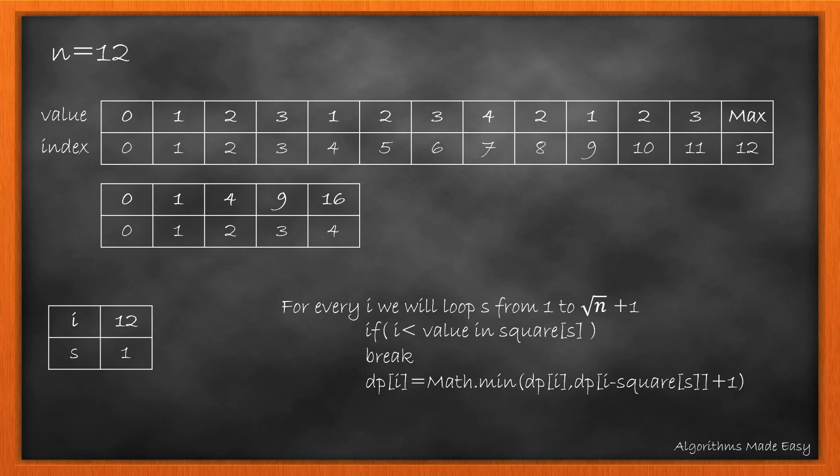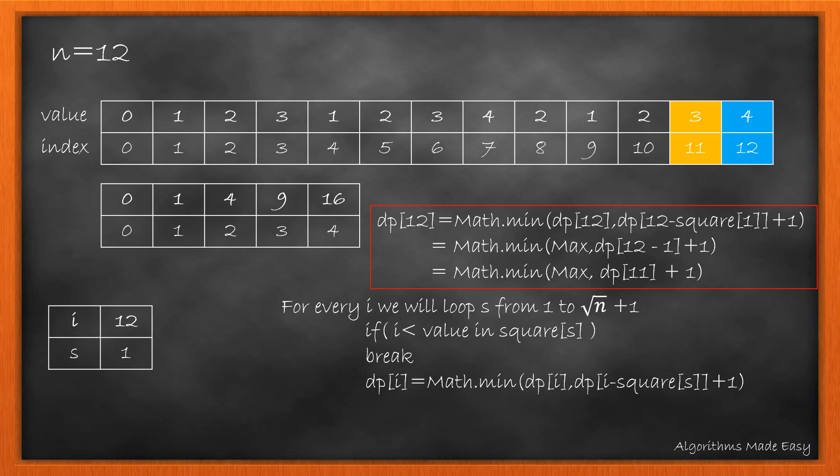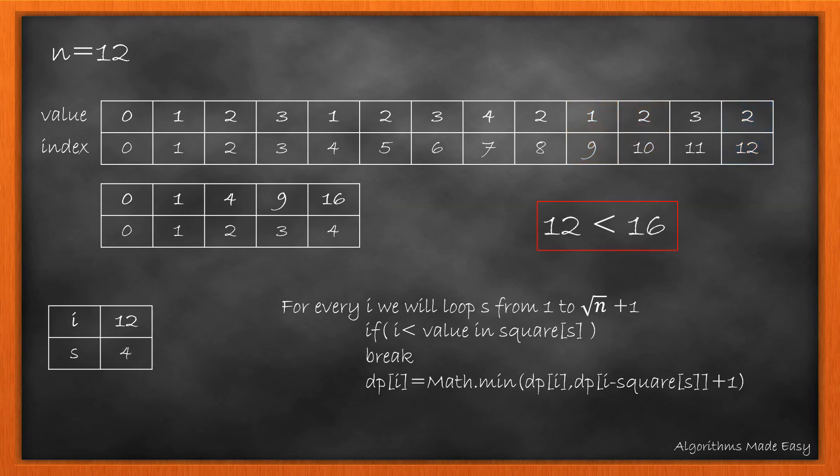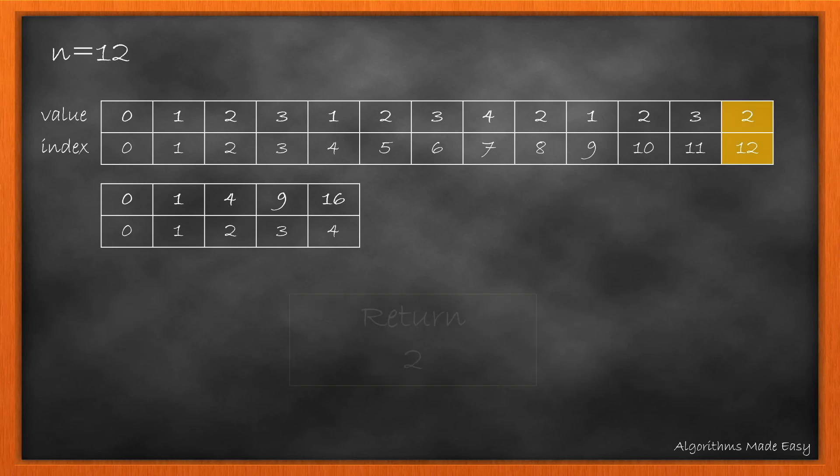Continuing with it, after looping till 11 the array will look like this. For i equal to 12 and s equal to 1 the value updates to 4. Moving forward it updates to 3 and then for s equal to 3 it updates to 2. Now the condition becomes true and so we return 2.